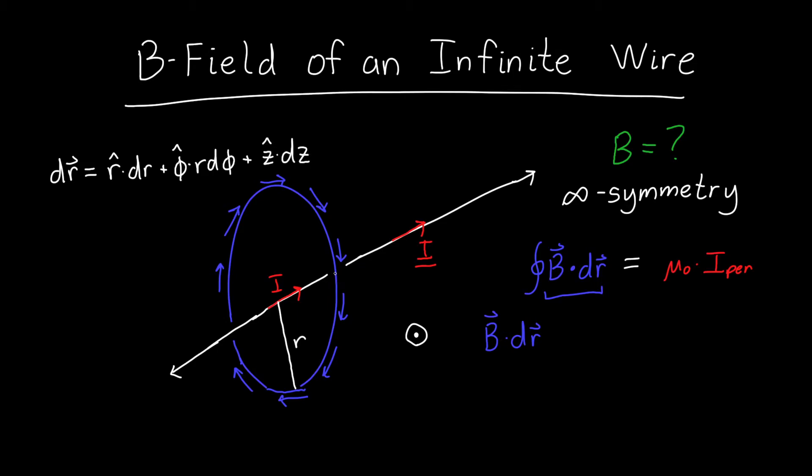Because our magnetic field is always curving around this circle, it's only ever pointing along the phi direction. So we don't have to worry about the z part because there's never a magnetic field pointing along z. And we don't have to worry about the r hat part because there's never a magnetic field pointing outward.